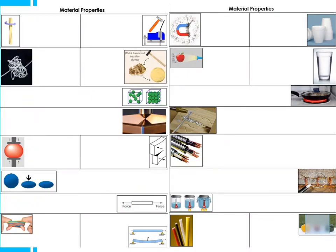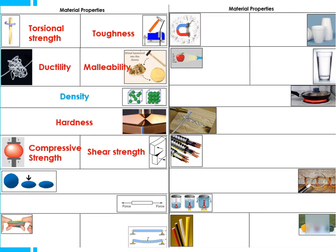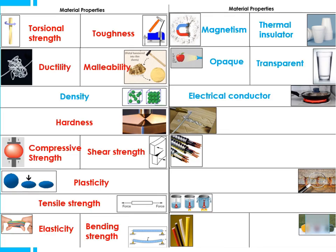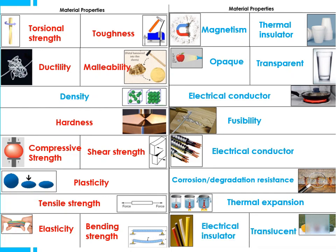On these pages, you may remember we did this as an activity at the beginning of the course. It gives you some ideas of what these different properties might look like — for example, density in the centre showing how many particles or molecules there are in a set amount of space. This gives you a few more images to get you thinking about what these properties actually mean.